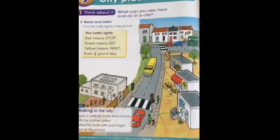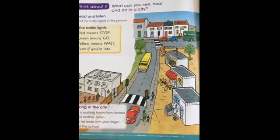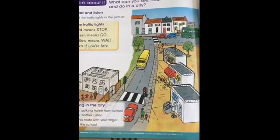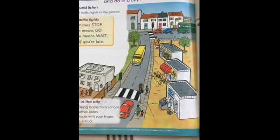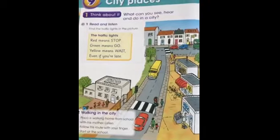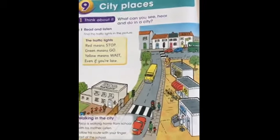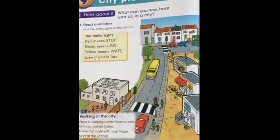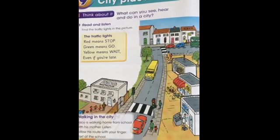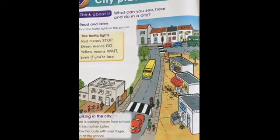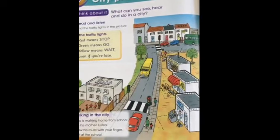We live in a city. Every afternoon, my mom meets me at my school. My school is on a busy road. There are lots of cars and buses. Listen to the traffic. It's very noisy. We wait for the traffic to stop. We look left. We look right. Then, my mom and I cross the road.